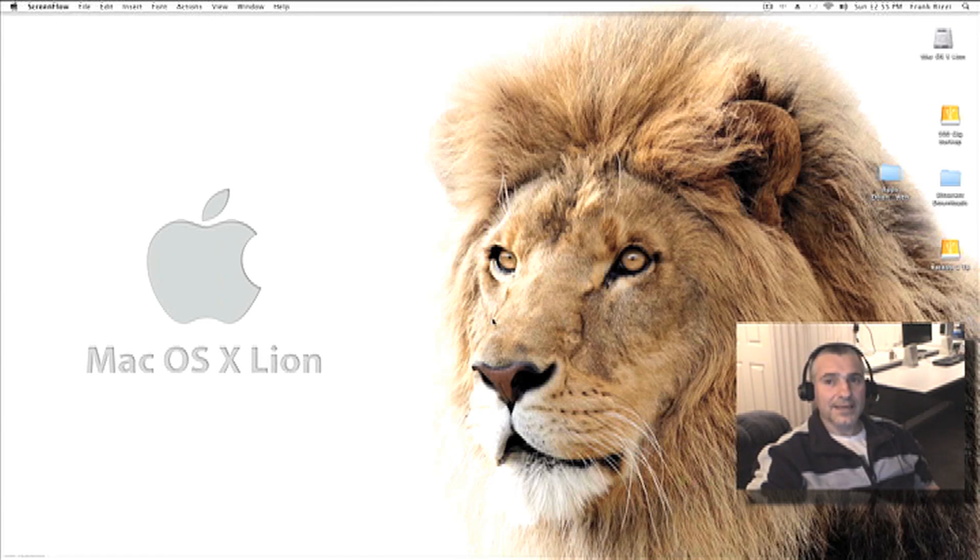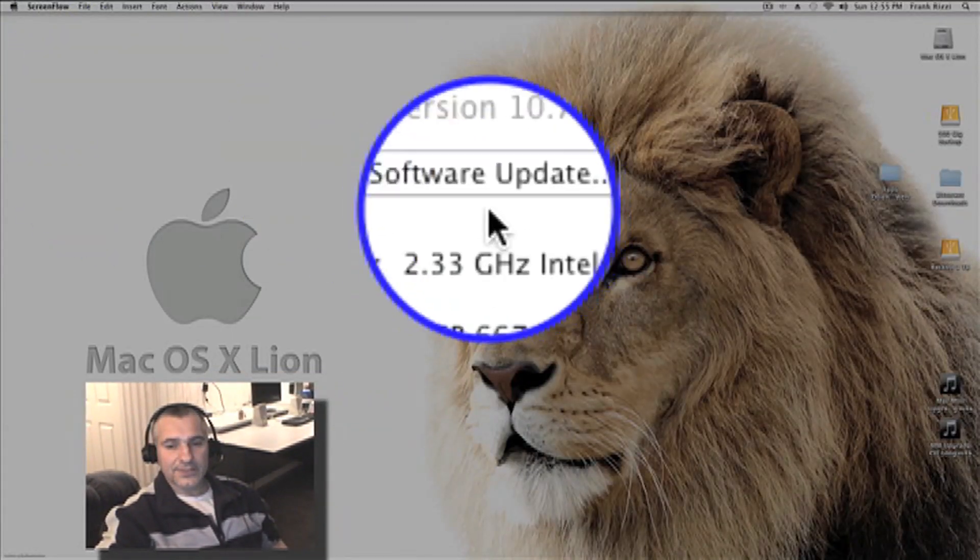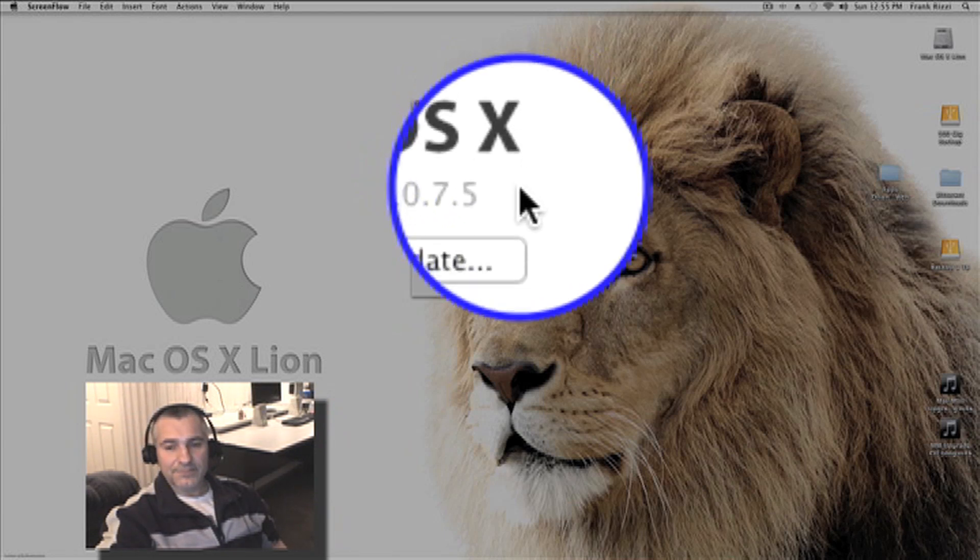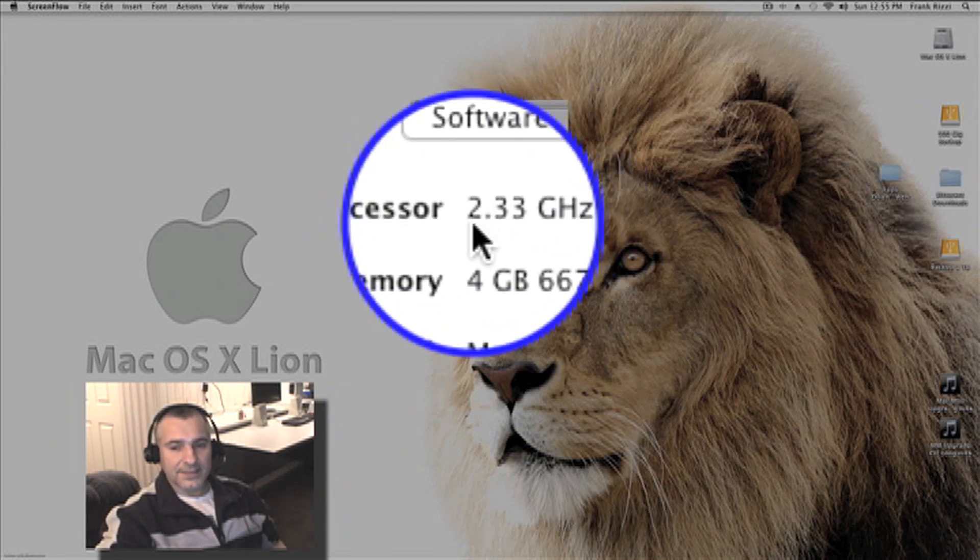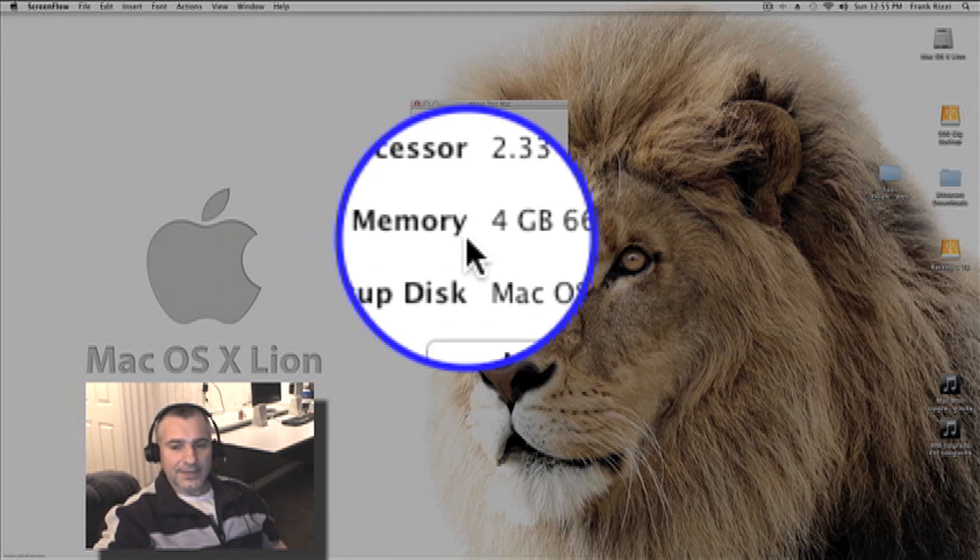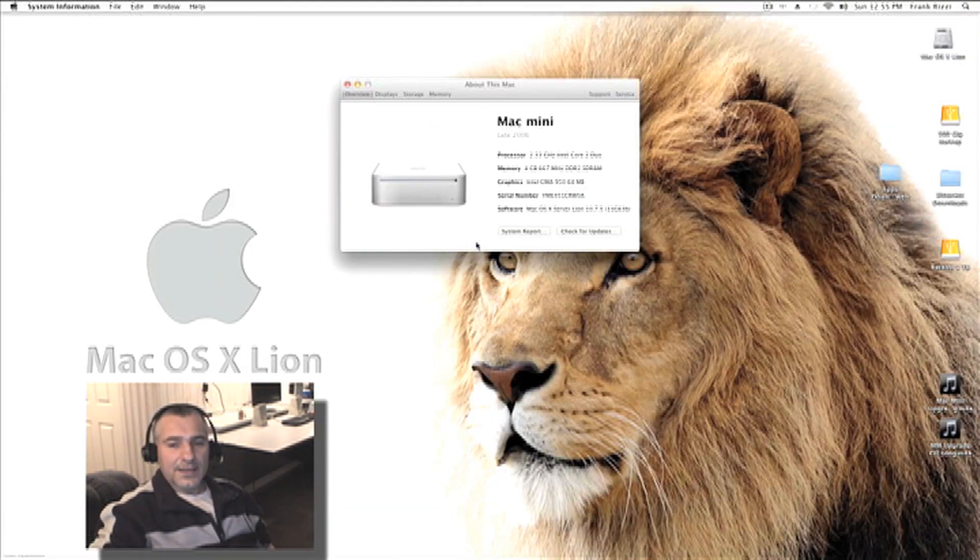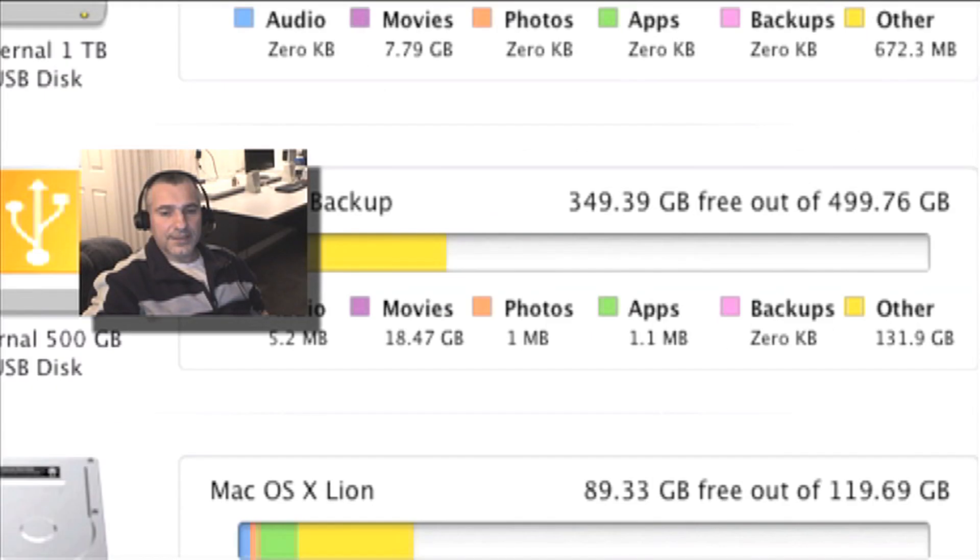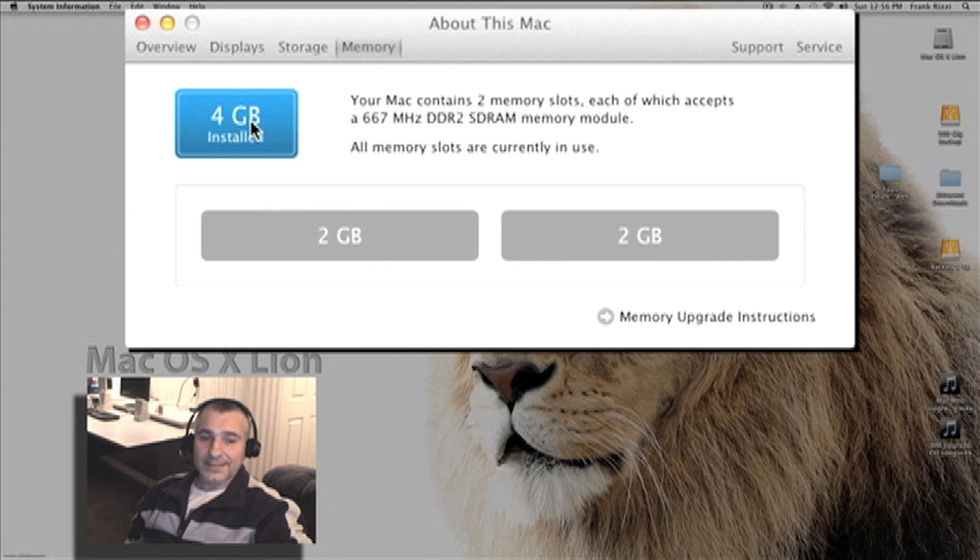Just to give you a little information, go to Apple, About This Mac. It'll tell you here I have Mac OS X Lion 10.7.5, that's the latest update for Lion. Shows you the processor here, 2.33 gigahertz Intel Core 2 Dual. Memory is 4 gigabytes at 667 megahertz DDR2 SDRAM. If you go to More Info and Storage, it'll show you here at the bottom my 120 gigahertz SSD hard drive. If you go to memory, it shows you 4 gigabytes installed. Your Mac contains two memory slots, each of which accepts a 667 megahertz DDR2 SDRAM memory module.